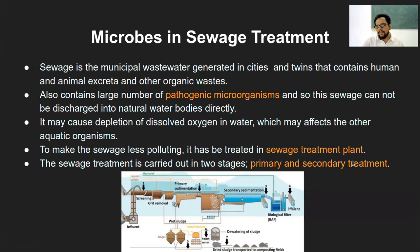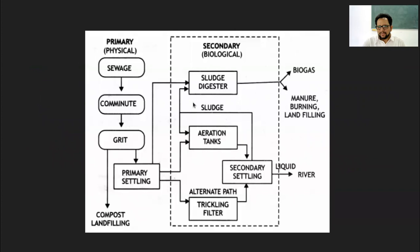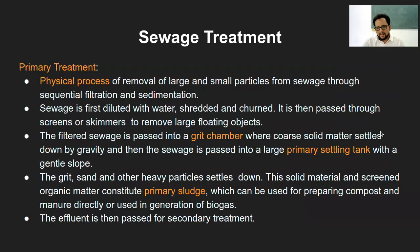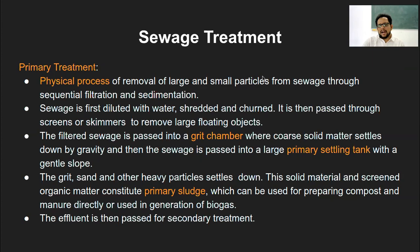To make sewage less hazardous it must be treated in a sewage treatment plant, abbreviated as STP. The STP usually has two processes: primary and secondary treatment. This is the usual schematic representation of the STP. In primary treatment it is merely a physical process of removal of large and small particles - essentially liquid and solid separation, removing large and small particles by sequential filtration and sedimentation.